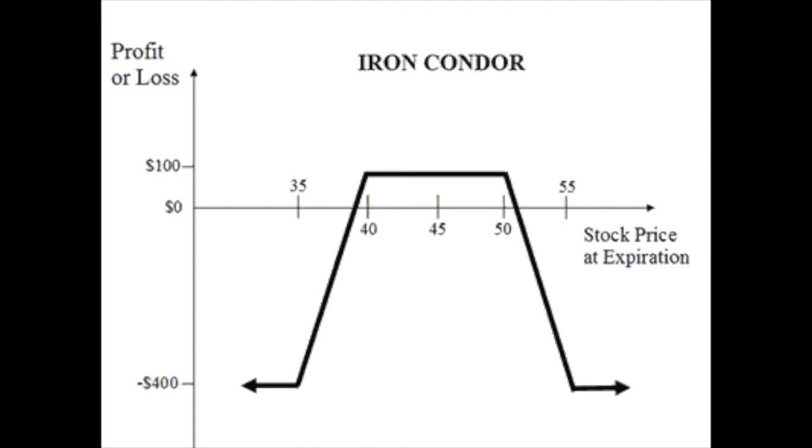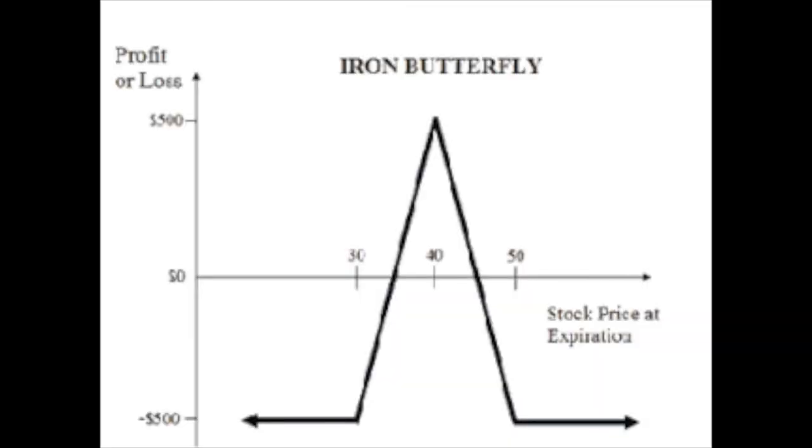The ninth strategy is the iron condor — you're holding both a bull spread and a bear spread. When the stock is not volatile, you earn a low premium but with a very high probability of keeping it, making it good for consistent income. The iron butterfly is similar, but all options are at the money. Both strategies generate high-probability income with low gains, applicable to non-volatile stocks — for example large cap stocks like Apple. This chart will show you better how it works.